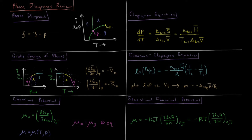There are two special points: the triple point, where solid, liquid, and gas all coexist, and the critical point, which is the highest temperature and pressure value where gas and liquid coexist before the fluid becomes supercritical.